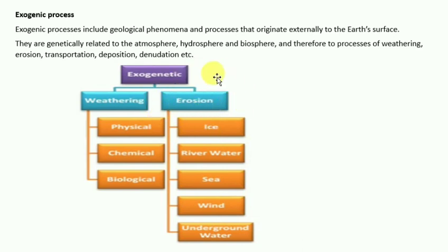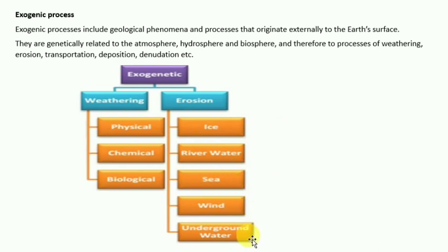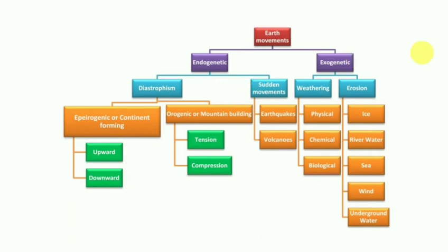After weathering, the second type of exogenic process is erosion. In mass movement, the mass of rock debris is transferred down the slope under the direct influence of gravity. Mass movements are aided by gravity, and no geomorphic agents like running water, glaciers, winds, waves, and currents participate in mass movement. In erosion, agents include ice, rivers, water, sea, wind, and underground water.